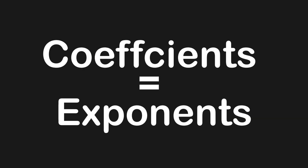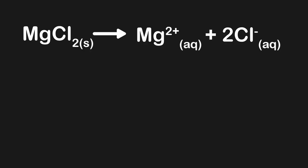Up to this point, none of the examples we've looked at have had stoichiometric coefficients. Let's discuss what we should do if our balanced reaction has stoichiometric coefficients. Ultimately, all you're going to do is take that coefficient and turn it into an exponent for whatever concentration it's associated with. Let's look at another example of Ksp. Remember, for Ksp or any equilibrium constant, we're not going to include pure solids or pure liquids, so we won't include MgCl₂ since that is a solid.